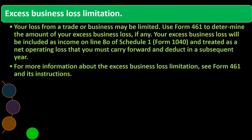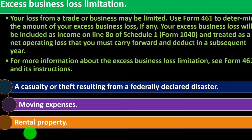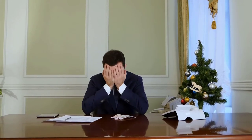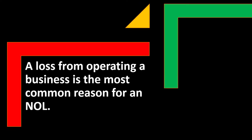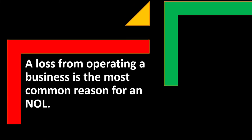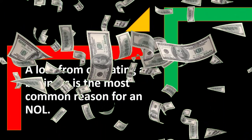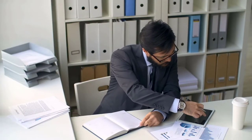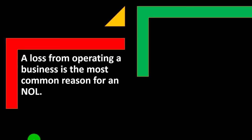For more information about excess business loss limitations, see Form 461 and its instructions. A loss from operating a business is the most common reason for a net operating loss (NOL). If you have a loss, you're getting a significant tax benefit. Also realize that losing money does not automatically mean your activity is a hobby — it might still be a legitimate business where you just haven't made money yet.